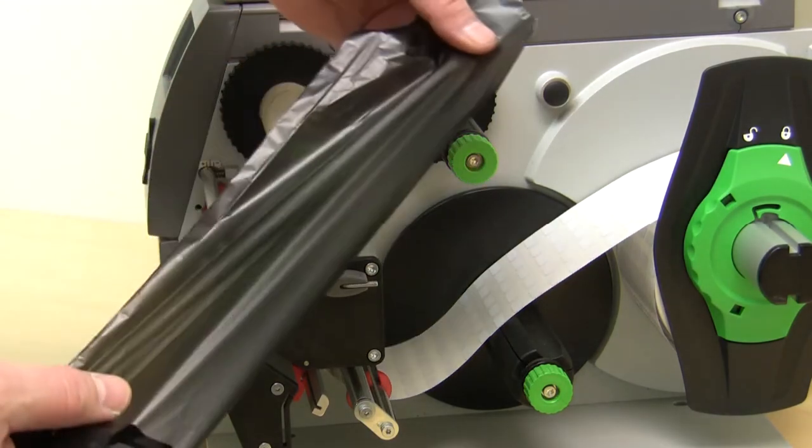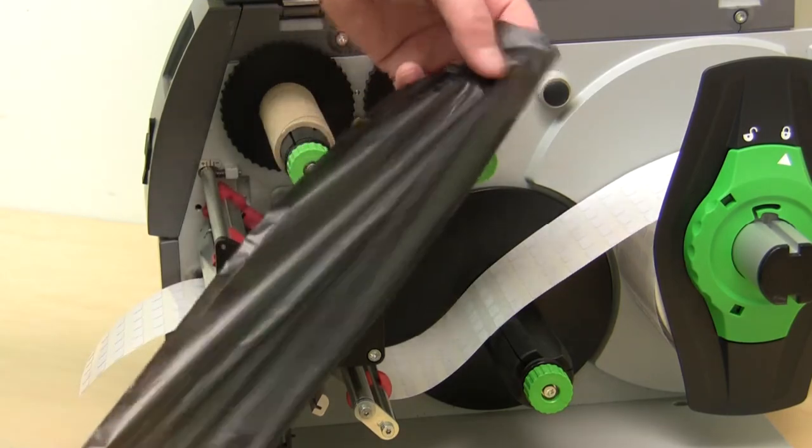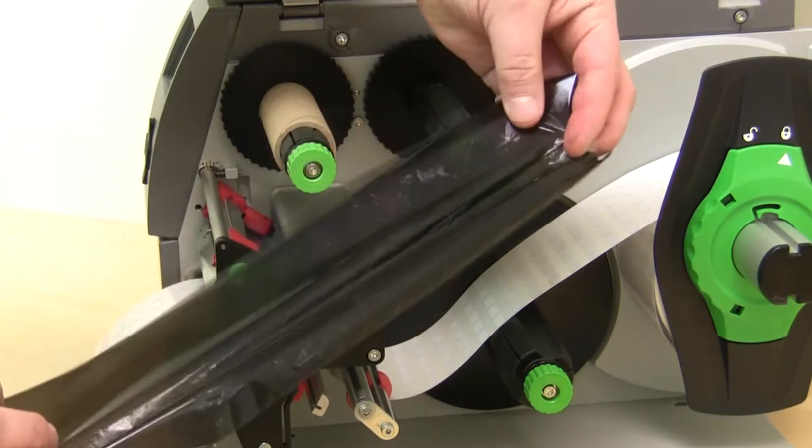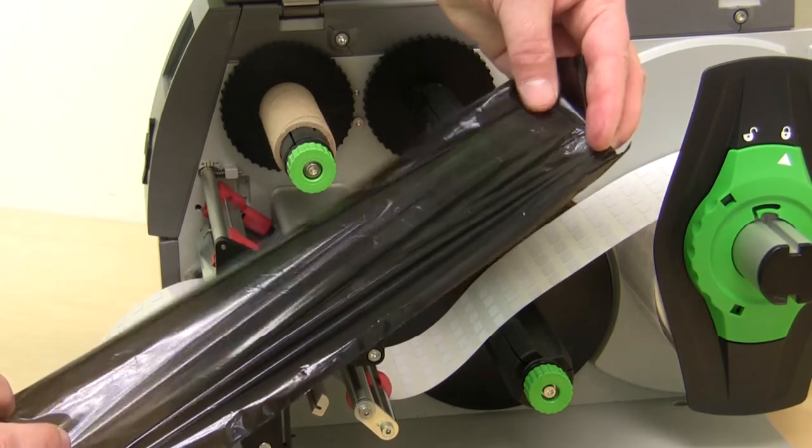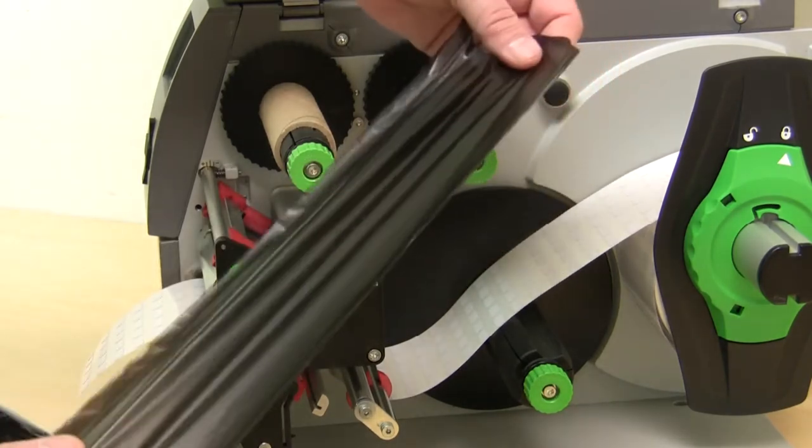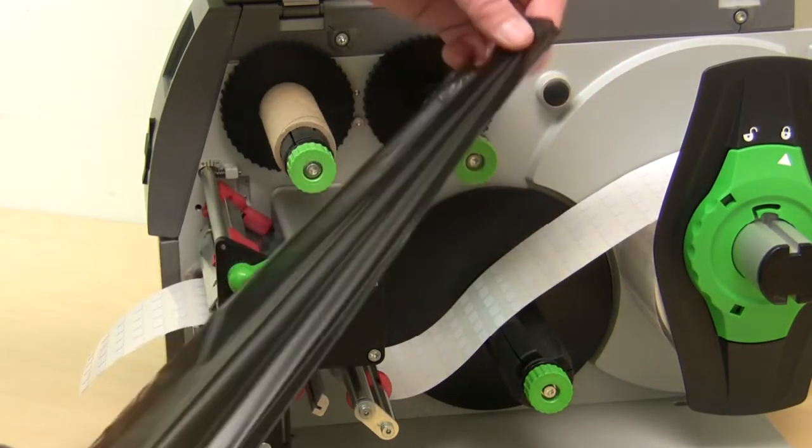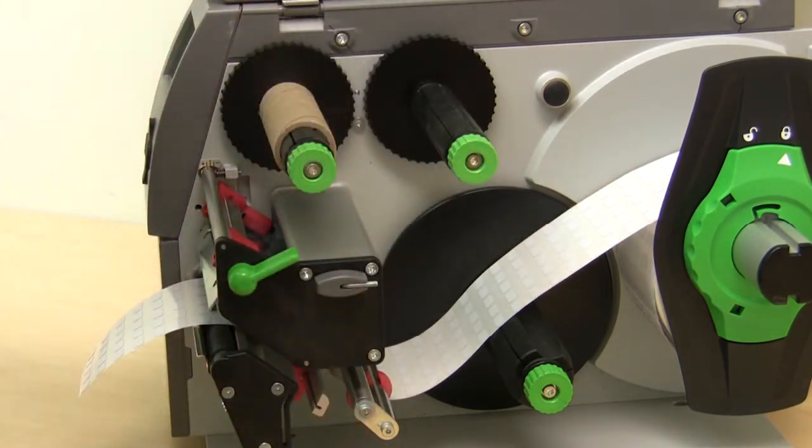You need to determine which type of ribbon you have, if it's coated side in or coated side out. The printer can use either one. Most of the time the ink is on the dull side of the ribbon. So in this case we have a coated side in ribbon, so we'll load it appropriately.